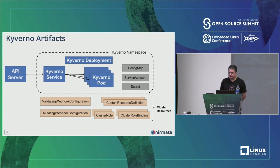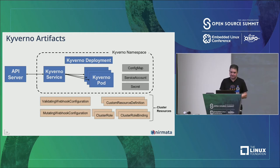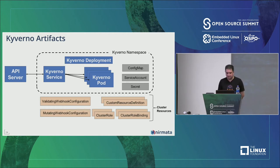From a deployment architecture perspective, each Kyverno install can have multiple instances running as a replica set to manage pod lifecycles. Kyverno also creates webhook definitions and custom resources that get installed and managed either through the Helm chart or YAML files.